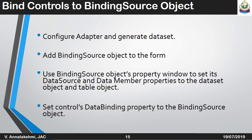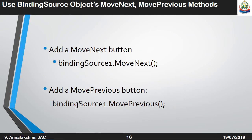To bind controls to a binding source object, configure the adapter and generate the data set. Add the binding source object to the form and use its property window to set its data source and data member properties to the data set object and table object. Set the control's data binding property to the binding source object. Use the binding source object's MoveNext and MovePrevious methods — add a Move Next button using BindingSource.MoveNext, and add a Move Previous button using BindingSourceName.MovePrevious.